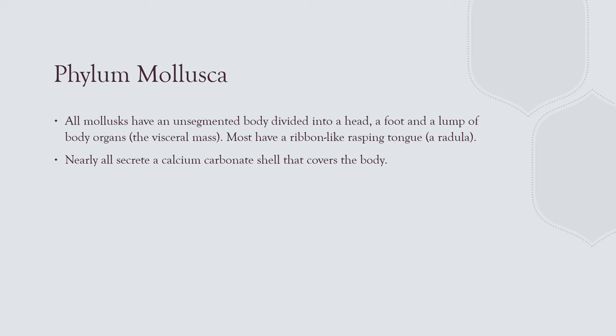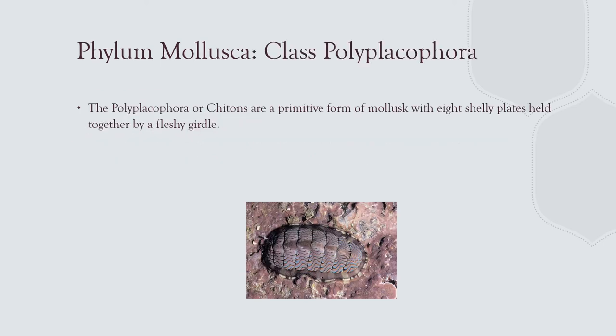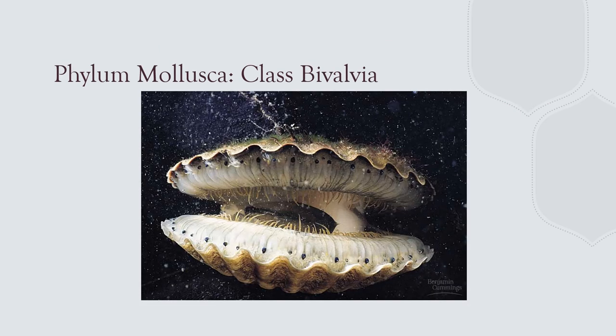Mollusks: most mollusks have a shell; sea slugs don't. Chitons are the only group of segmented mollusks — a kind of link between mollusks and annelids. I see them crawling on rocks in the Florida Keys; they're very abundant and people eat them. Bivalves have a two-part shell. The scallop is an environmental indicator of water quality. In Tampa Bay, we used to have thriving scallops, but in the 70s, population growth and wastewater problems wiped the scallop population out. Now the population is making a recovery, indicating improving water quality.